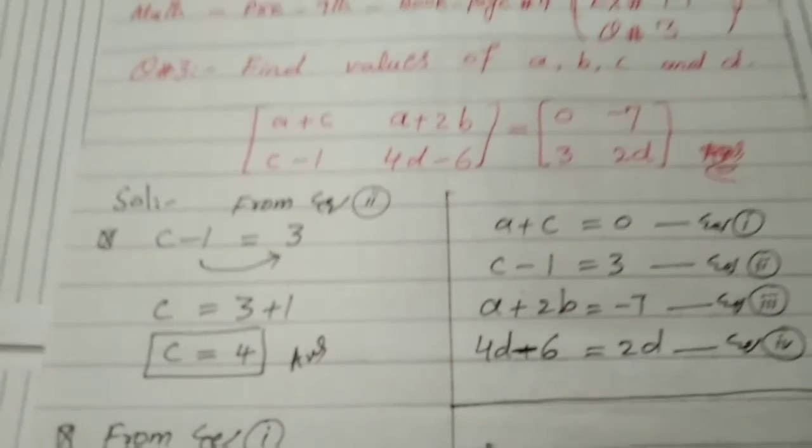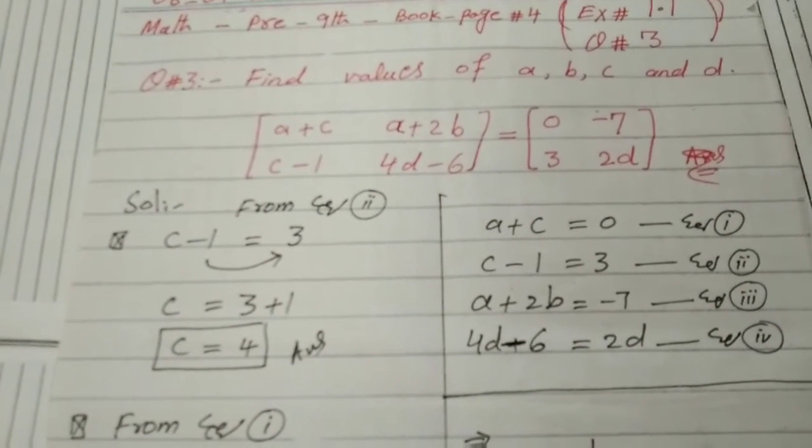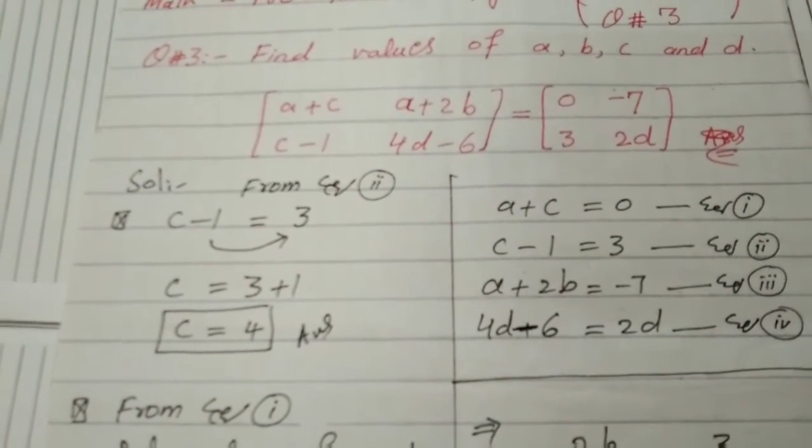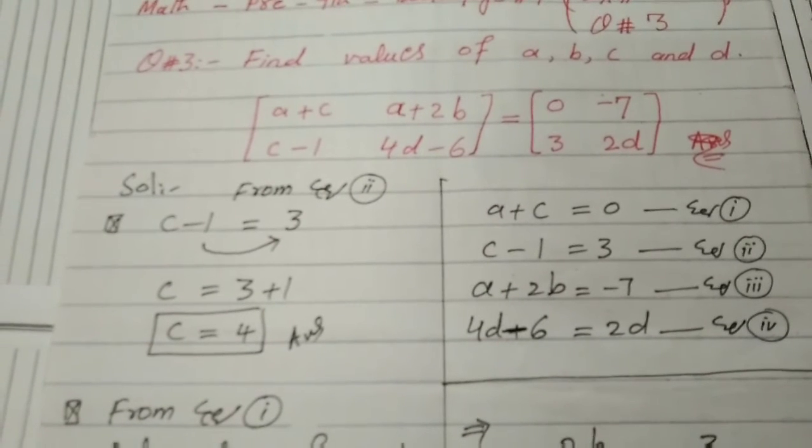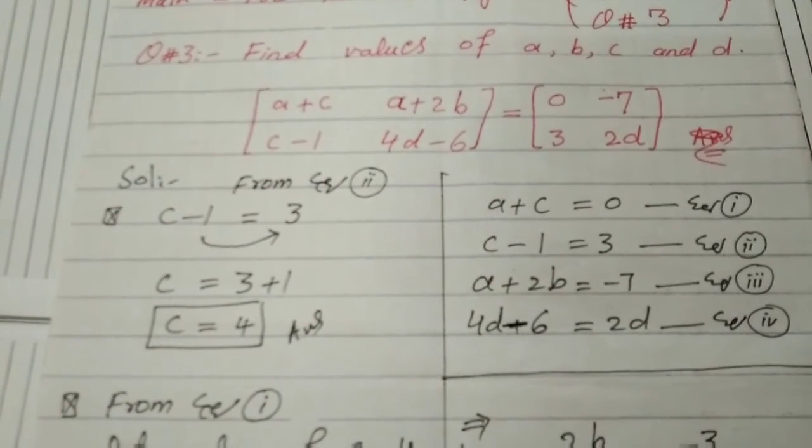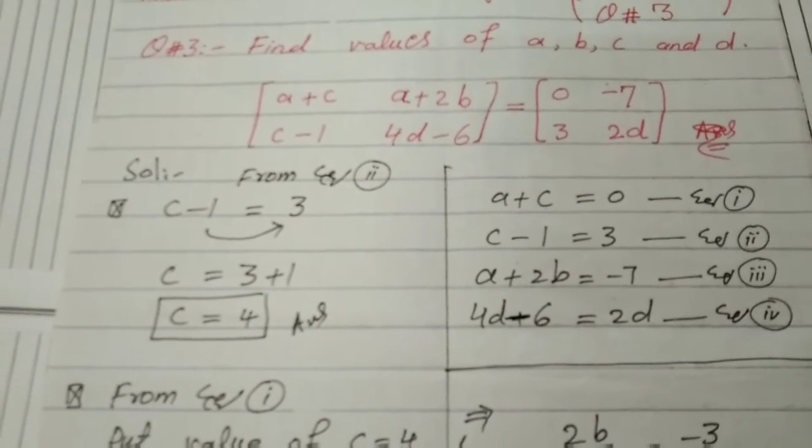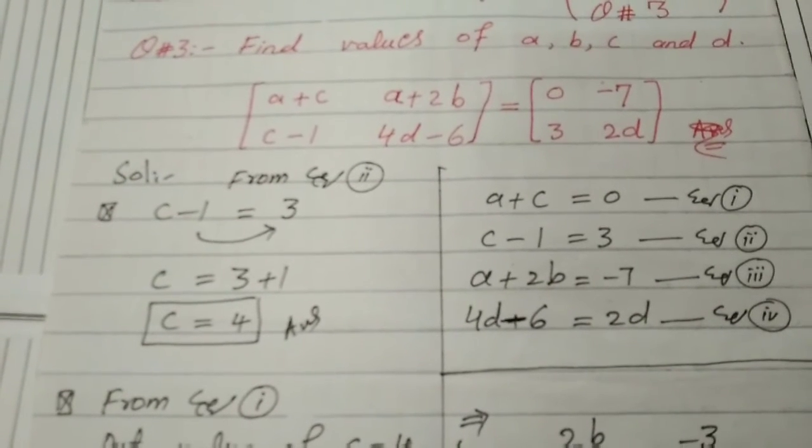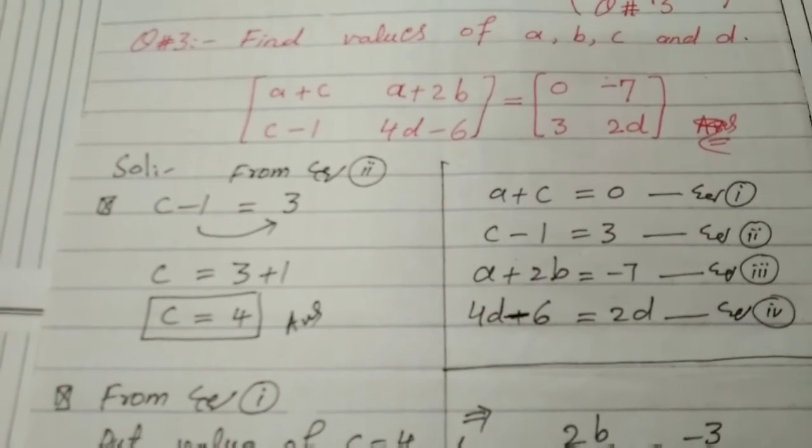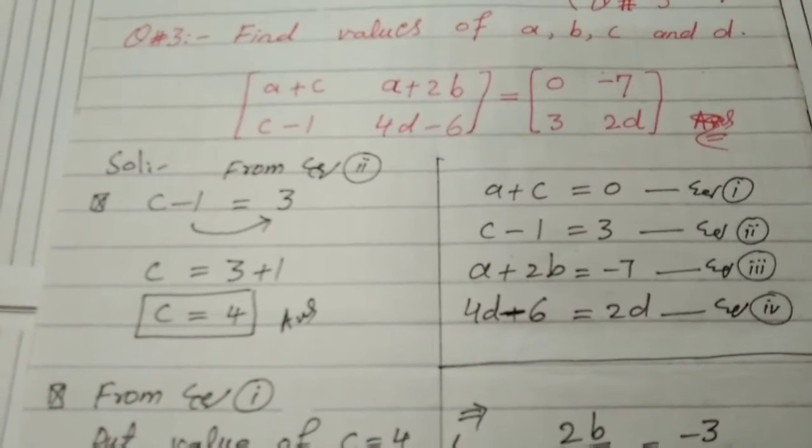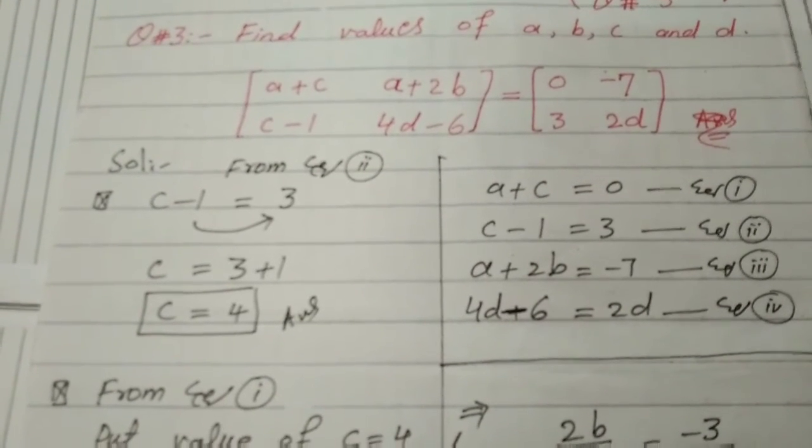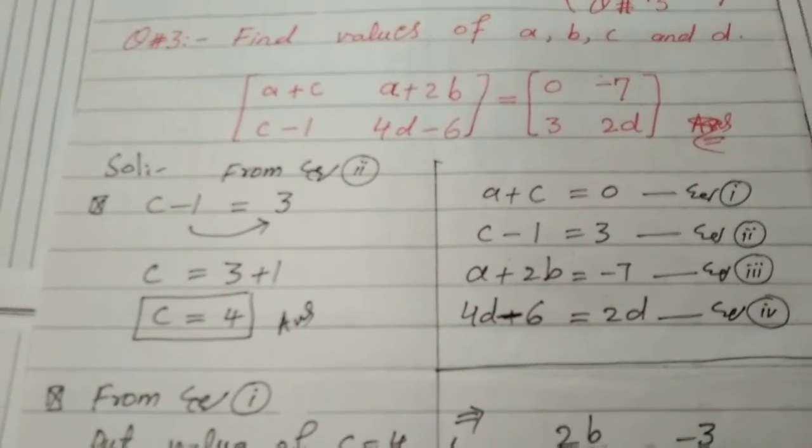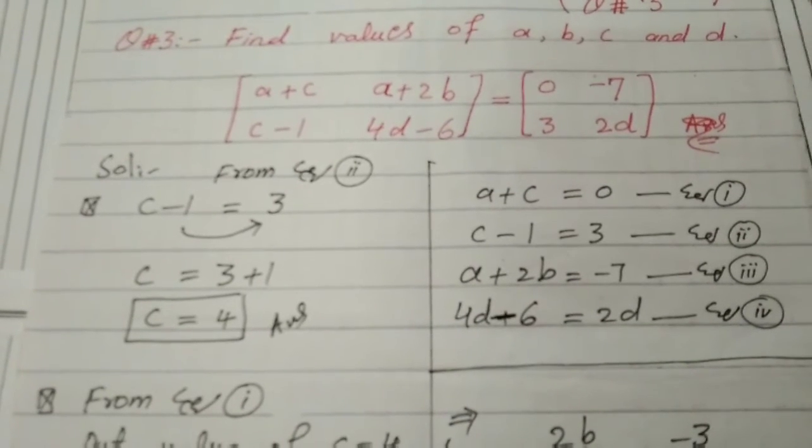This is question number three, which is very important. Find the value of a, b, c, and d. You can see there are two matrices. Both are equal, so we can get four equations.